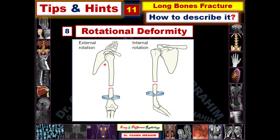This is an external rotation because it is rotated externally. In another example of the shoulder joint examined in the AP view, if you look at the distal joint of the elbow you can see it in the lateral view, indicating internal rotation. According to the direction — internal or external — you can describe it accordingly. If you have both the proximal and distal joints of the long bone in view, you can discriminate whether there is external or internal rotation. These are the eight items you should describe when facing long bone fractures.